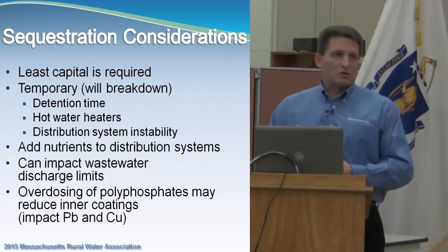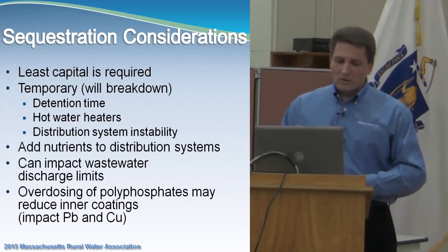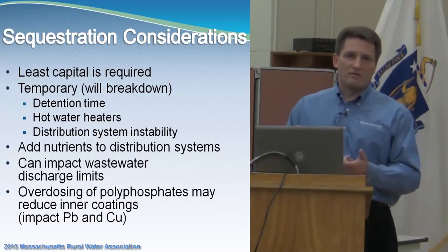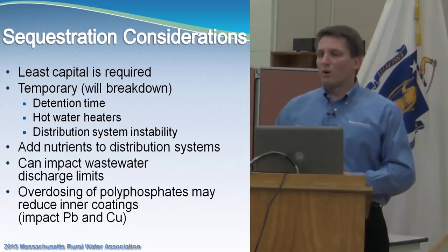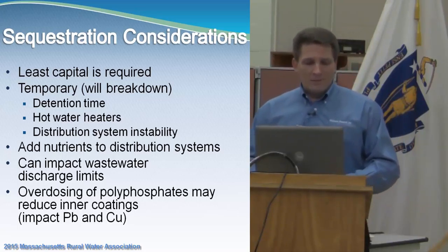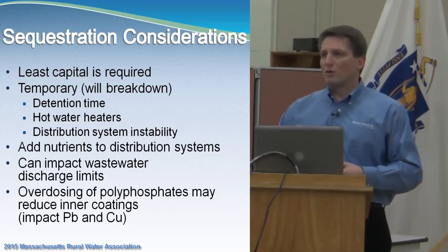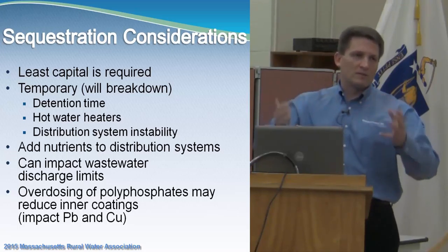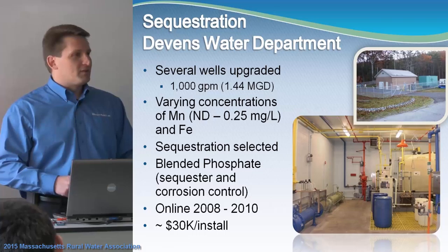Sequestration adds nutrients to the distribution system, specifically phosphates. Organisms want to grow on phosphate, and that will impact anyone with a wastewater treatment plant discharging to a river, where phosphate limits are getting tighter and tighter. If you think about using a sequestrant, talk to your wastewater department about those secondary impacts. Another caution with polyphosphates: if you're doing corrosion control, an overdose can be problematic for the coatings that have formed to allow you to pass your lead and copper rule samples.